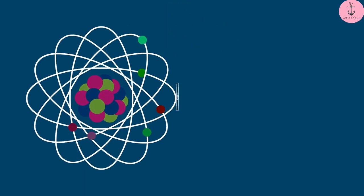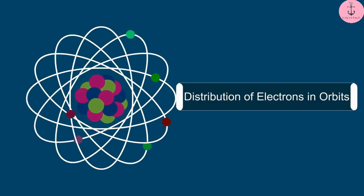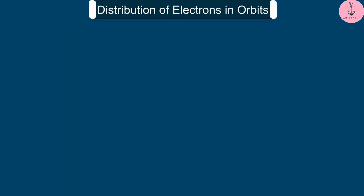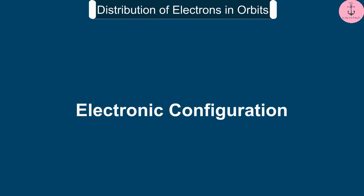Hello friends, welcome to this video session. The topic we are going to study in this session is the distribution of electrons in orbits. We also know it as electronic configuration.